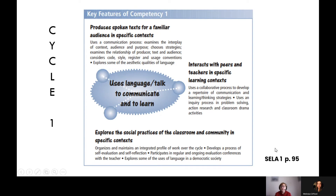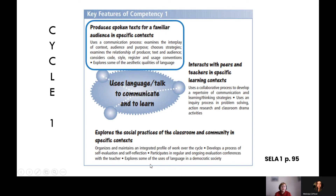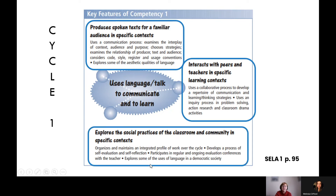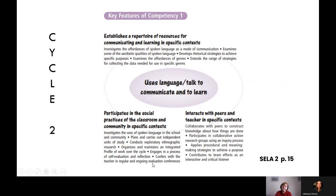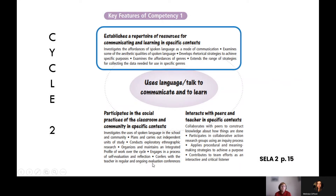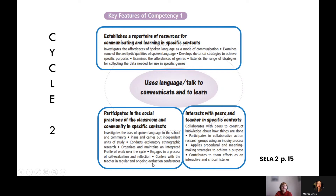For each competency in the QEP, there are key features like subheadings that add more detail and flesh out the competency. For the talk competency in Cycle 1, students are producing spoken texts for a familiar audience in specific contexts, interacting with peers and teachers in specific learning contexts, and exploring the social practices of the classroom and community. For the talk competency in Cycle 2, students are establishing a repertoire of resources for communicating and learning, participating in the social practices of the classroom and community, and interacting with peers and teacher in specific contexts.